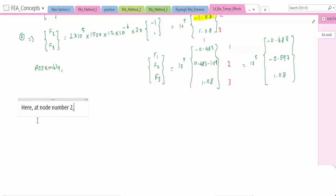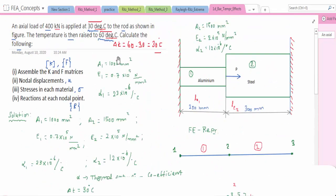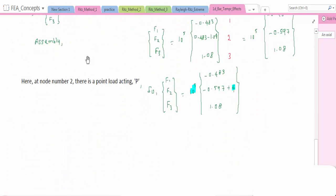Now we have to add the nodal force. There is a force at node number 2, a point load that is acting at node number 2. That also we have to add here. F1, F2, F3 equal to -0.483, -0.597 plus 4. This 4 into 10^5 has been taken from 400 kN. It can be written as 4 into 10^5. Again reduce this value, we will get -0.483, 3.403, 1.08. This is the actual force matrix.